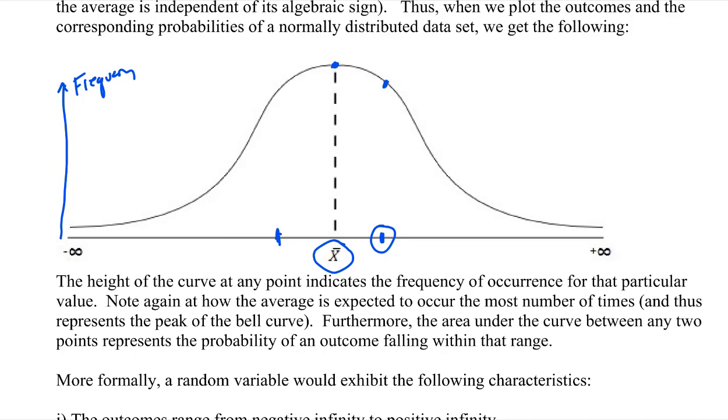And similarly over here, this value is also possible. It's just that it's not as frequent as the average. Now look what happens as we move further away from the average. So as you move further away from the average, these values are still possible. They could occur, but now they're occurring much less frequently. In other words, they're less probable. And similarly, on the negative side, so if you move further away from the average, this value is possible, but it's just not occurring as often.